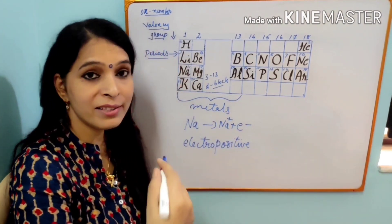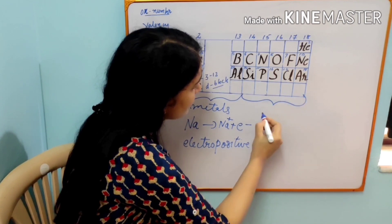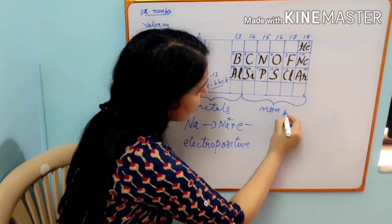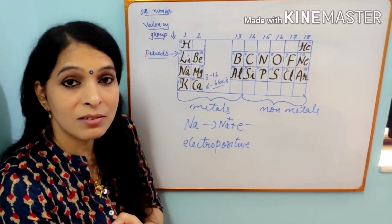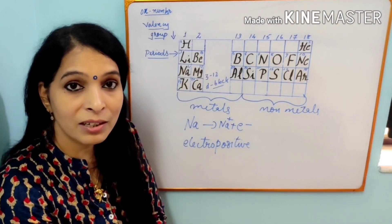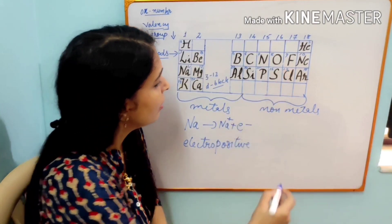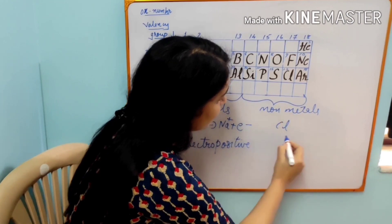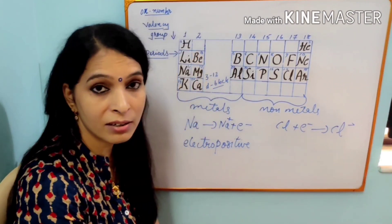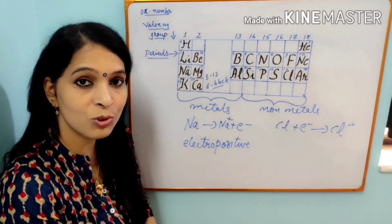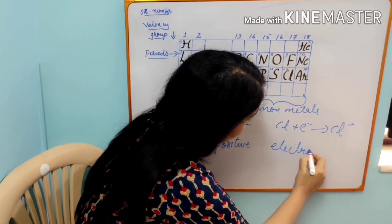Now, next category, non-metals. From group 14 to 18 are non-metals. They accept electrons. They will always accept electrons and they will become negative. For example, chlorine. Chlorine is an element. It will accept electron and will become Cl minus. It will become negative charge. And they are known as electronegative.